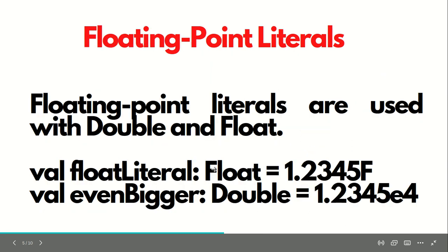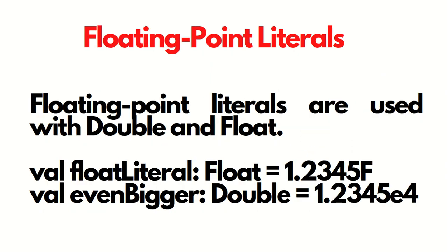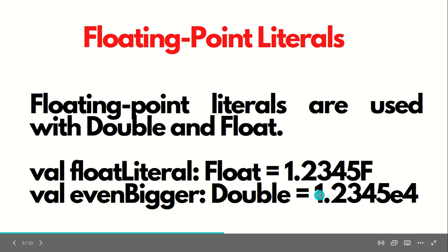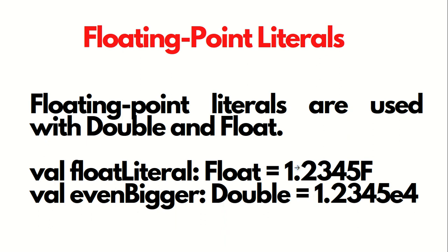Then we have floating point literals, represented with the data types double and float. For float, the example is 1.2345f, and for double it is 1.2345e4. These are examples of floating point literals.